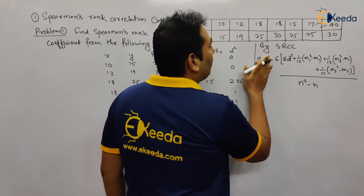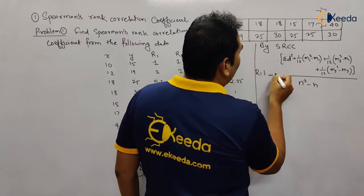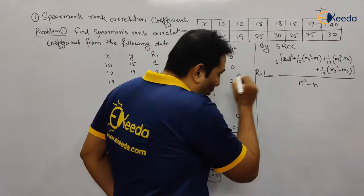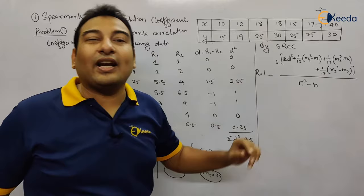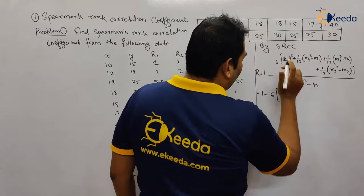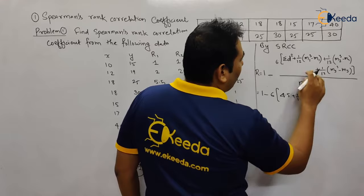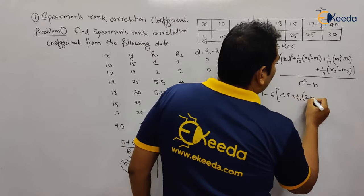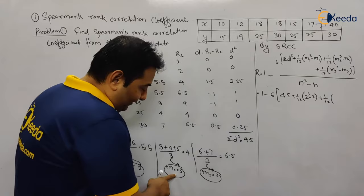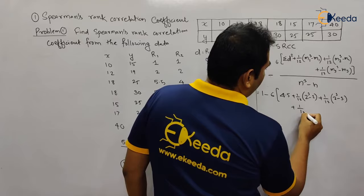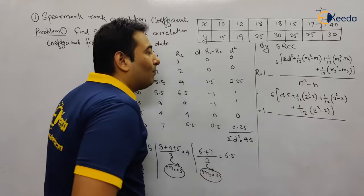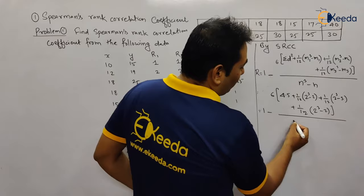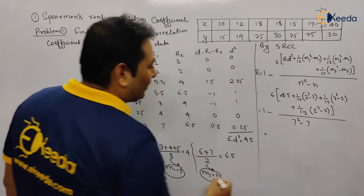Substituting values: Σd² = 4.5, m1 = 2 so (2³ − 2) = 6, m2 = 3 so (3³ − 3) = 24, m3 = 2 so (2³ − 2) = 6. n = 7 values, so n³ − n = 7³ − 7 = 336. Putting this entire equation into the calculator gives the answer: r = 0.866.